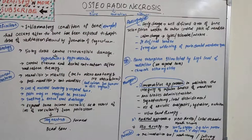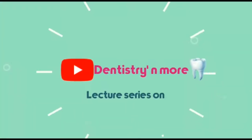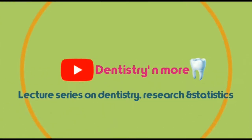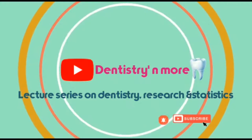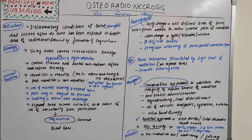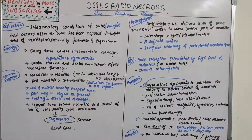Osteoradionecrosis is an inflammatory condition of bone — that is, osteomyelitis — that occurs after the bone has been exposed to therapeutic doses of radiation, which results in the formation of a sequestrum, or dead bone, or a necrosed bone. Ultimately, the irradiated areas become dead bone after a particular etiology.